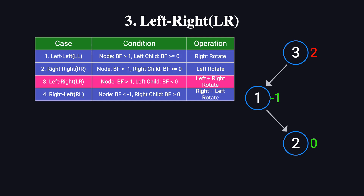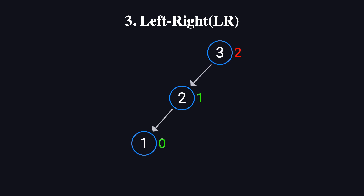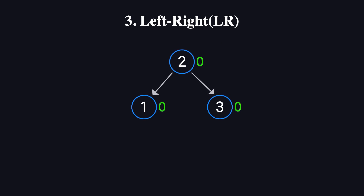To fix this, we perform two rotations. First, a left rotation on node 1, followed by a right rotation on node 3. After the left rotation, node 2 becomes the middle node between 1 and 3. At this stage, the tree's structure resembles the LL case. To complete the process, we perform a right rotation on node 3, making node 2 the new root. Now node 1 becomes the left child of node 2, and node 3 becomes its right child. With this adjustment, the balance factors of all three nodes are reset to 0, and the tree is balanced again.